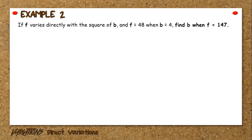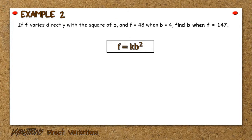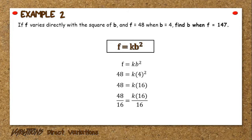Example 2: If f varies directly with the square of b and f equals 48 when b is 4, find b when f is 147. First determine the mathematical equation which is f equals k times b squared, wherein k is the constant of variation and must not be equal to 0. Using the equation, substitute the given values of f and b, which is 48 and 4. It will be 48 equals k times 4 squared, or 48 equals k times 16. Divide both sides by 16 and the proportionality constant will be 3.